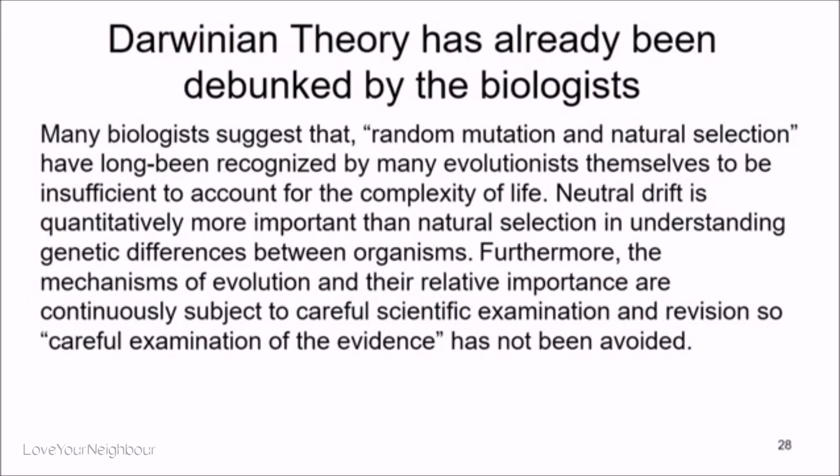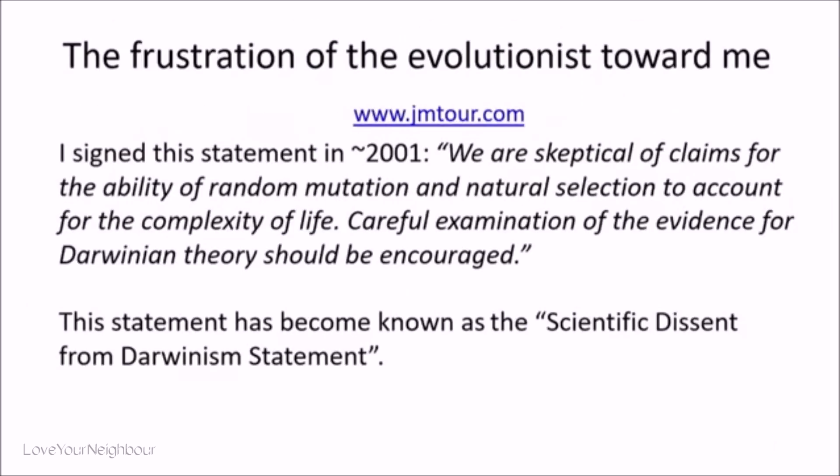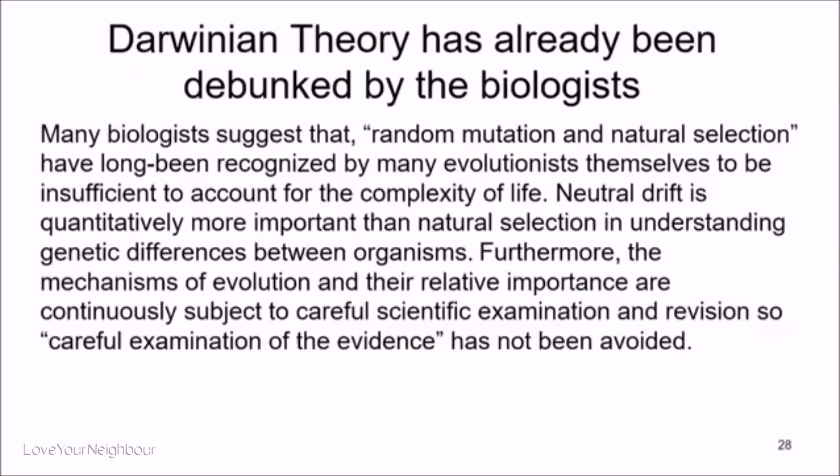So if it's not random mutation and natural selection — and you say that's already been debunked — why don't you sign the statement with me? They say neutral drift. What's neutral drift? That's the small genetic changes that occur between me and my children and then between them and their children.